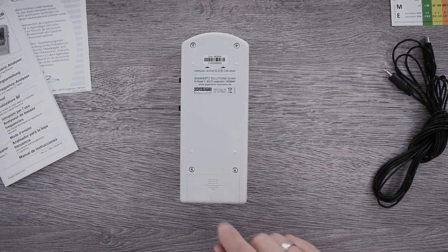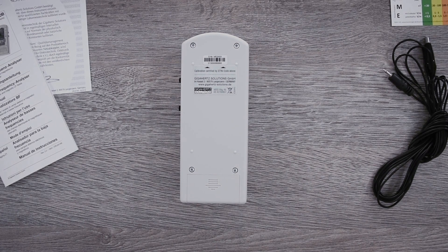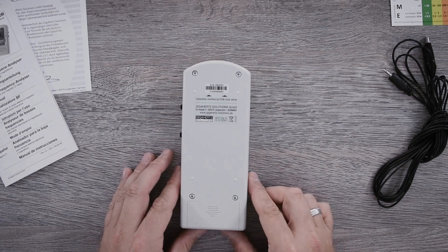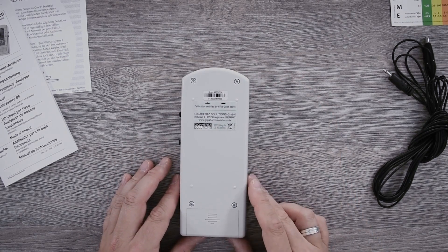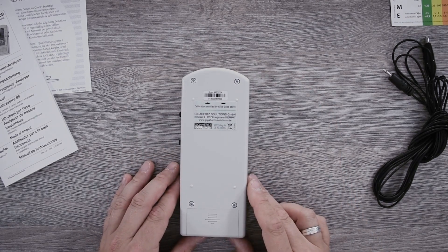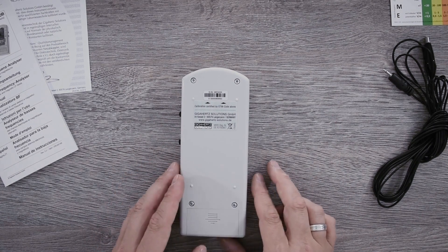On the back down here is the battery compartment holding the included 9-volt block battery. And here above, you see the internal serial number of the ME3030 together with our company logo.